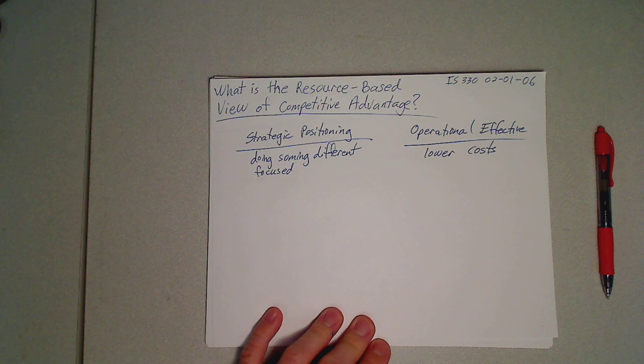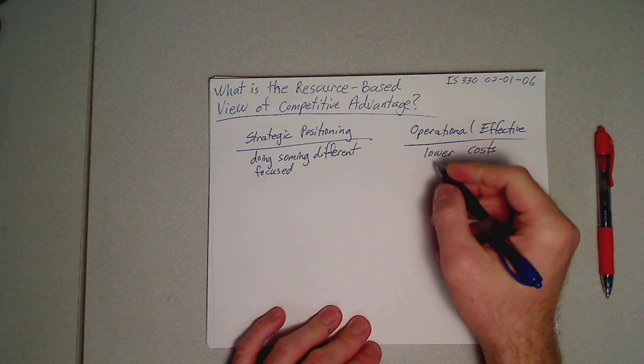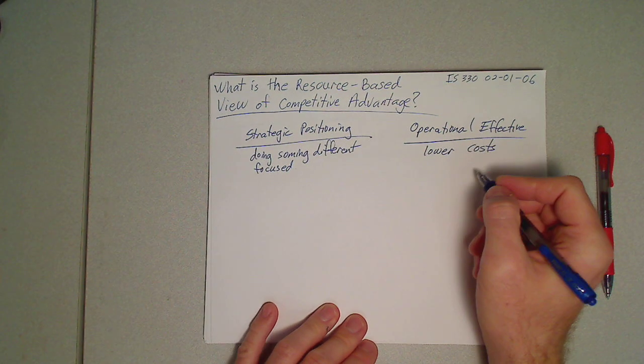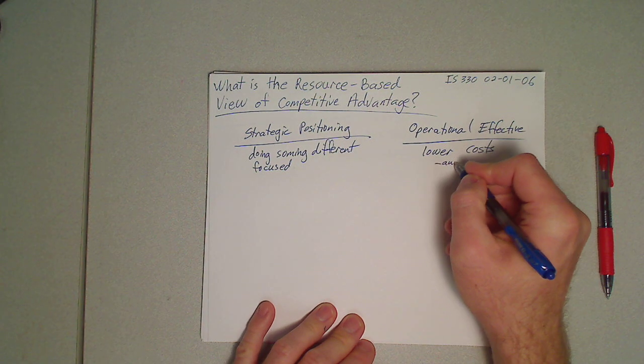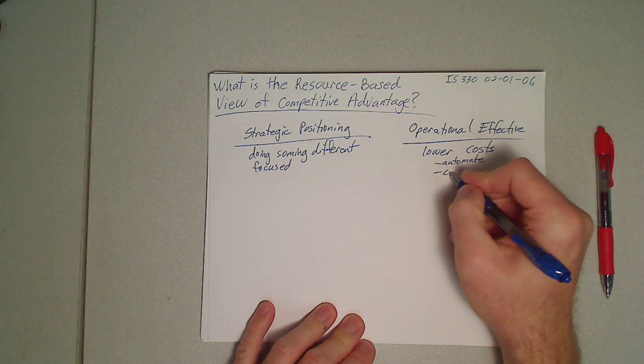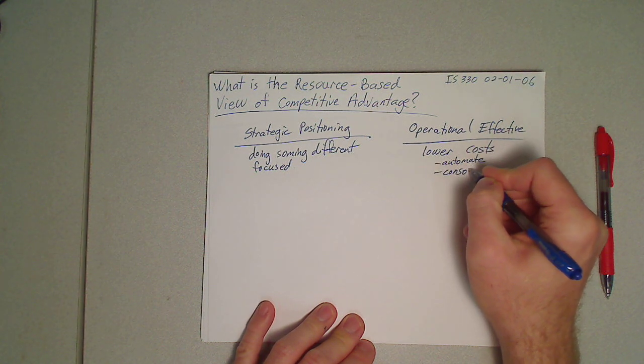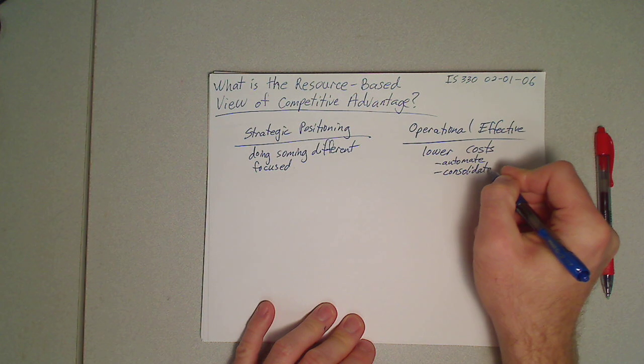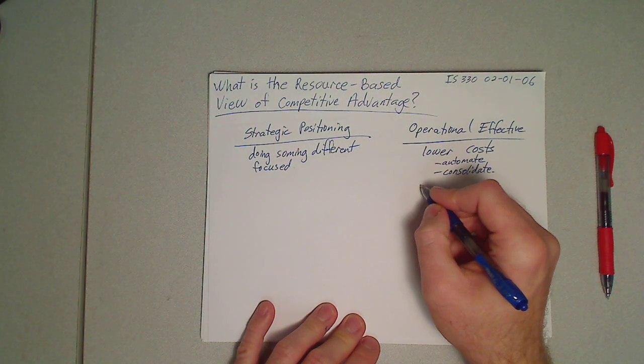Now, the challenge here that we've talked about is the things we do to lower costs—automate, consolidate, etc.—are easily copied.